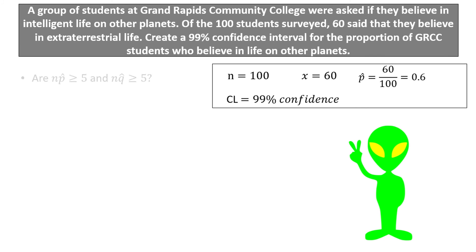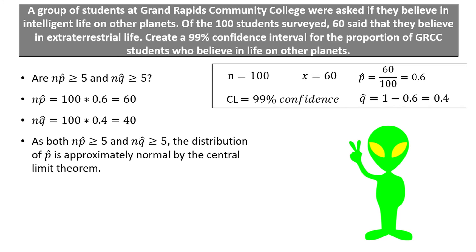We need to check if n times p-hat and n times q-hat are both at least 5. Remember that q-hat is just 1 minus p-hat. 1 minus 0.6 is 0.4. 100 times 0.6 is 60, and 100 times 0.4 is 40. Both values are at least 5, so the central limit theorem ensures that we can use the normal distribution to approximate the distribution of p-hat. Now as for any confidence interval, we should also be assuming that there was a random sample, and as I've stated in other videos, we can imply that that's the case in most circumstances, even if it isn't explicitly stated.